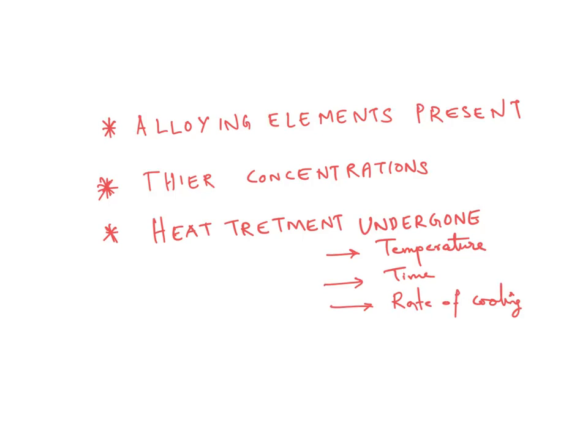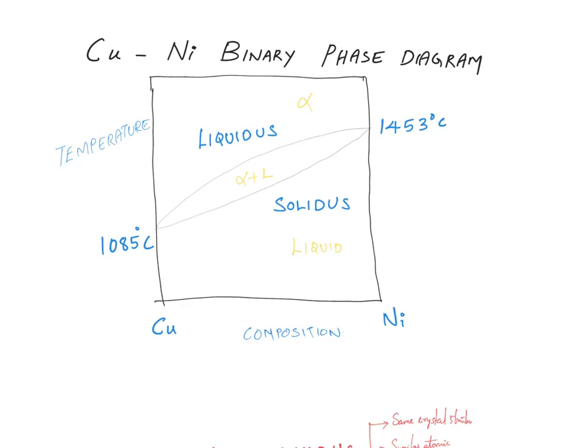So that was a brief introduction about microstructure. Now let's go ahead and talk about binary phase diagrams. The first phase diagram that we will discuss today is a copper-nickel binary phase diagram. On the y-axis we have temperature and on the x-axis we have composition.